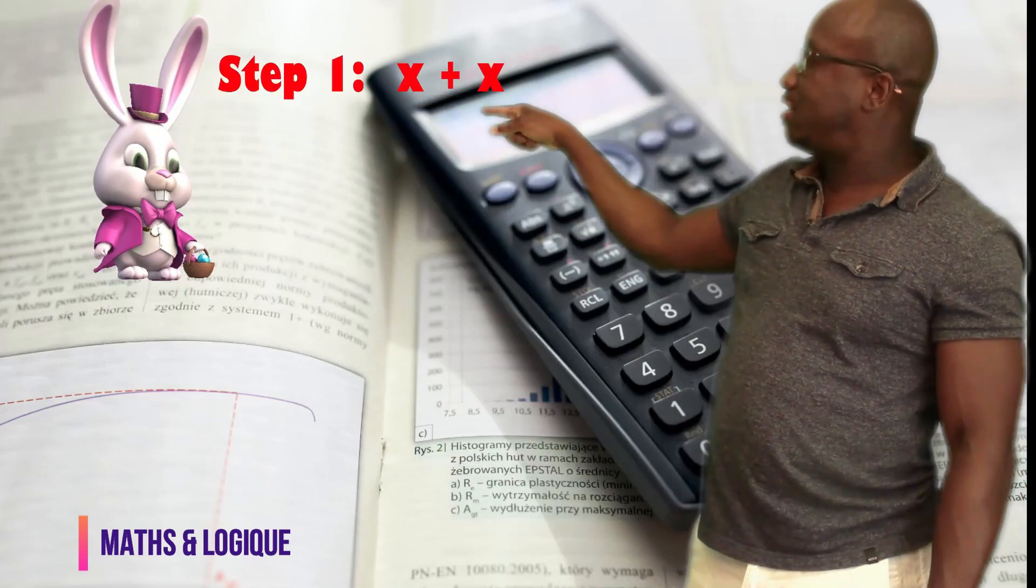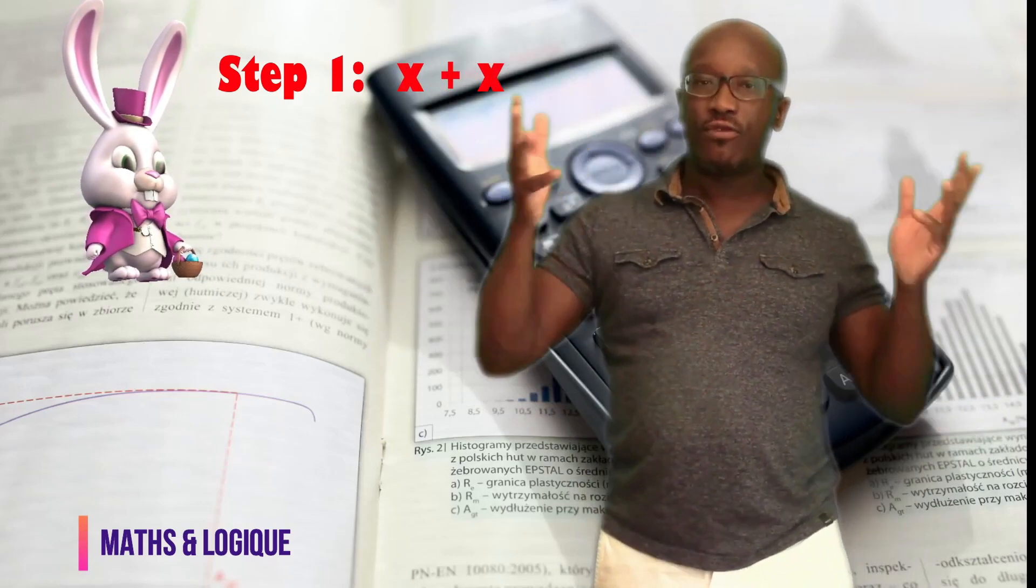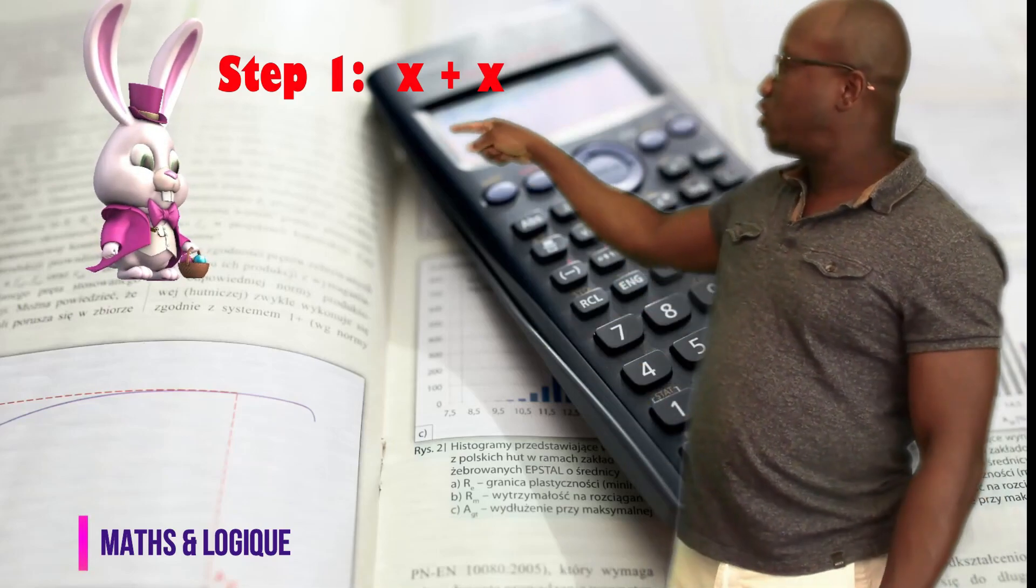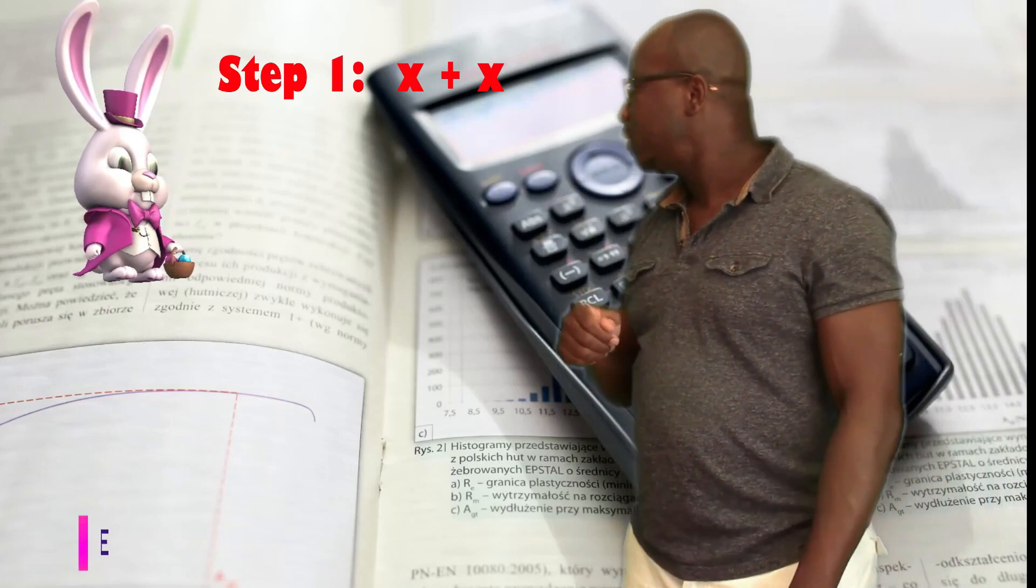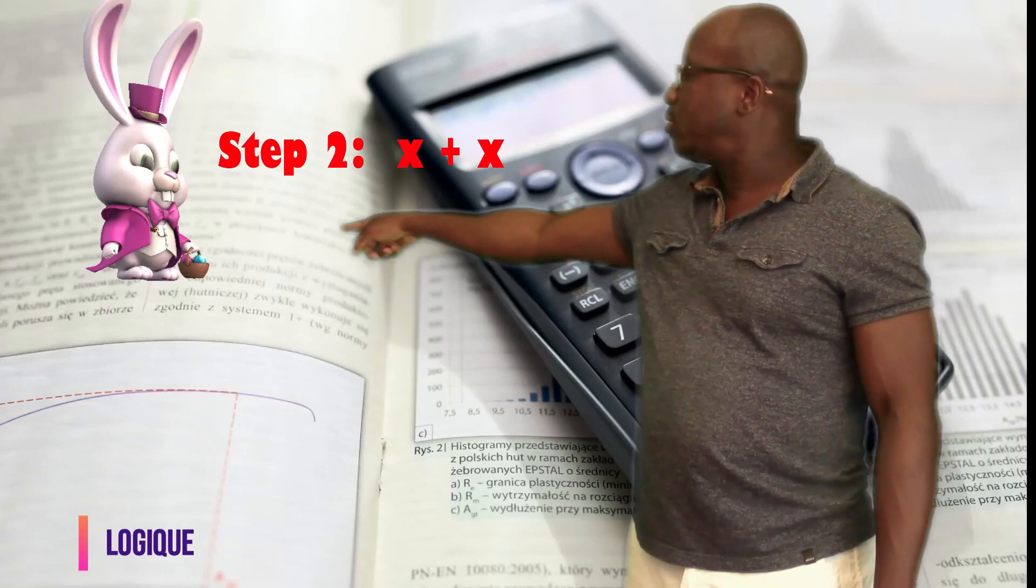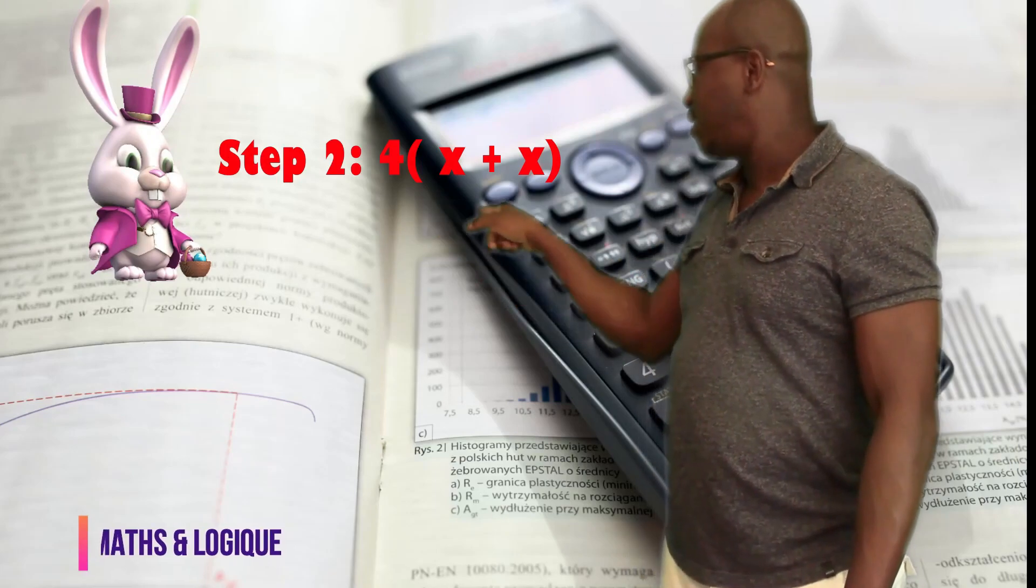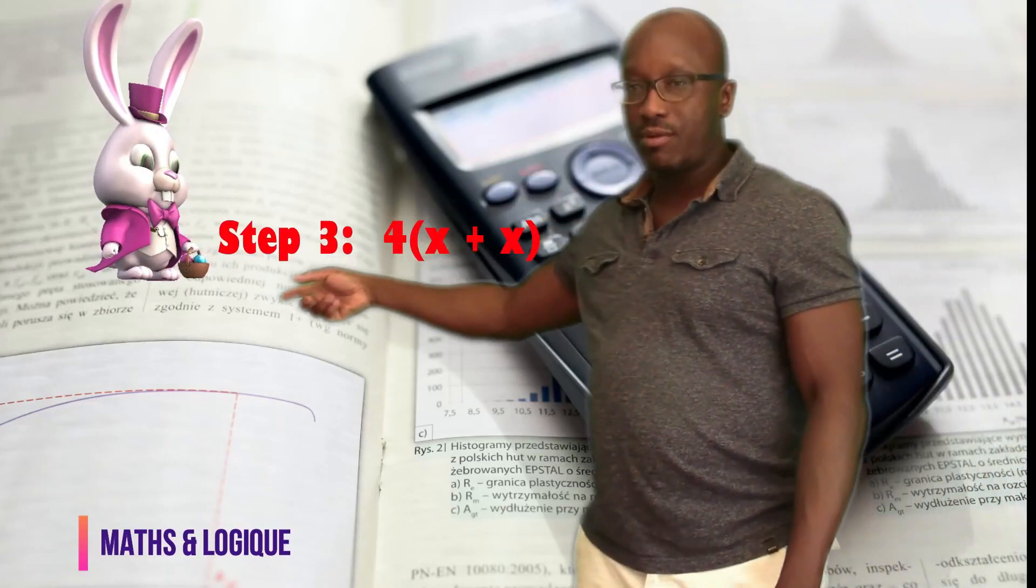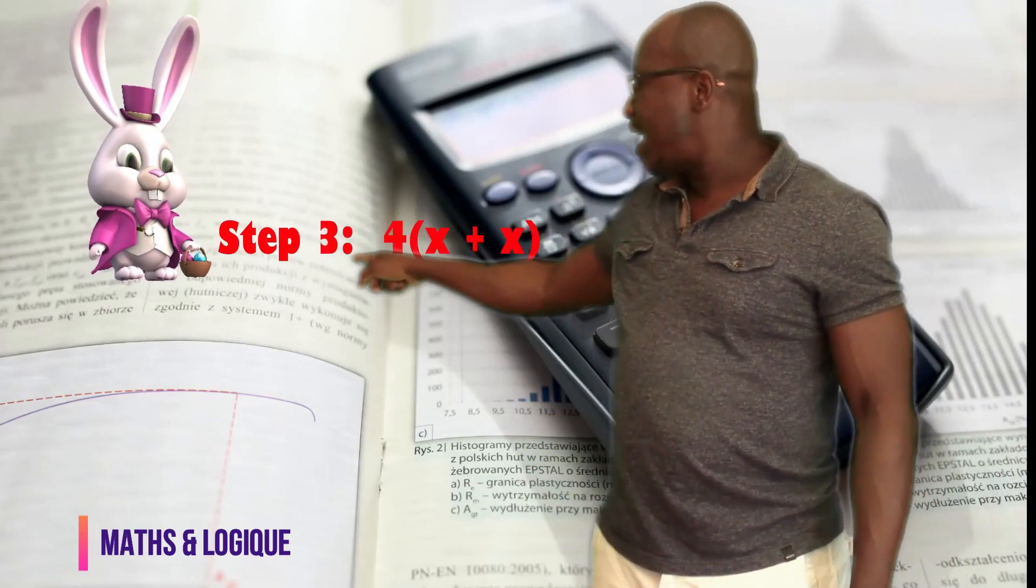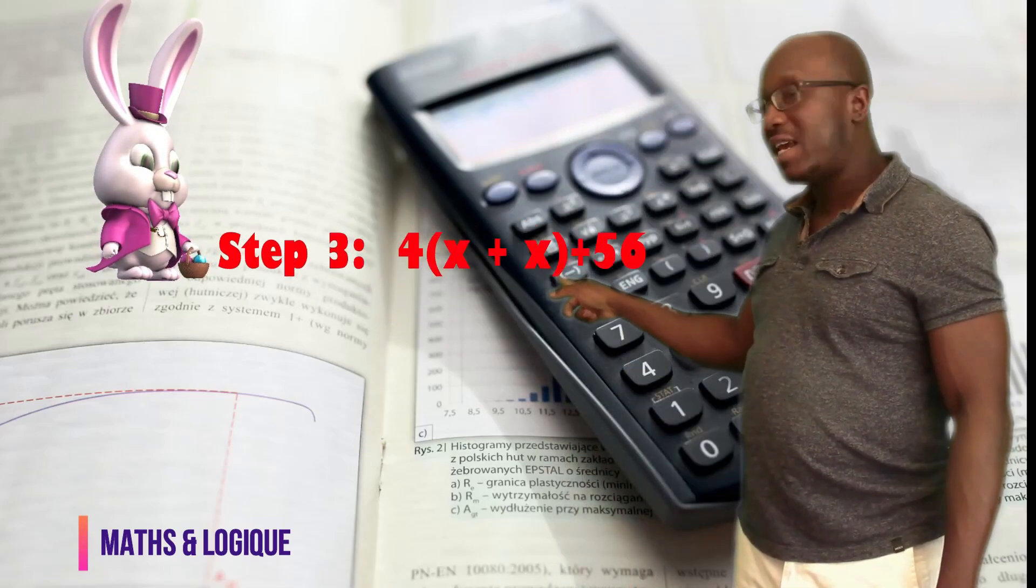Step number 1. I took x. x, this is the random number that your friend will choose. And you are telling your friend to add the number to itself. So, it's x plus x. Step number 2. This result in step number 1 is supposed to multiply it by 4. So, we have 4 times x plus x. Step number 3. You told your friend to take the result that he found in step number 2 and to add 56 to it.